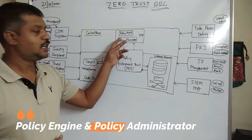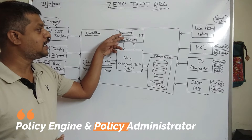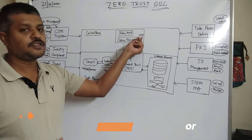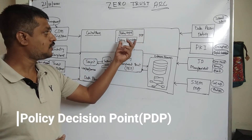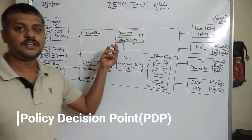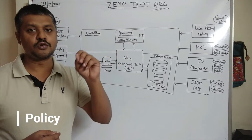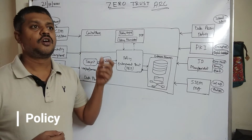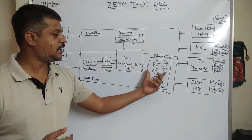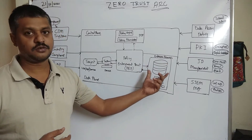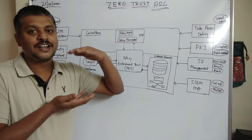We have the policy administrator. Policy engine and policy administrator together form the policy decision point (PDP). And what is the policy? Policy is nothing but certain rules — rules and the intent. This is related to enterprise resources and the access to the rule set.